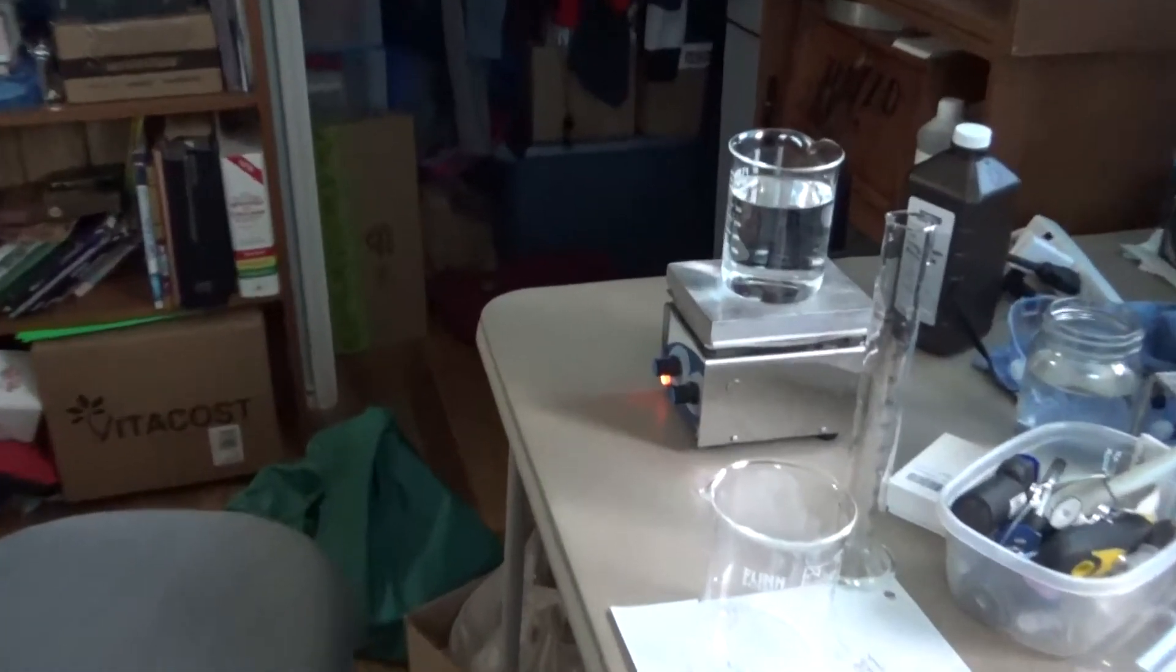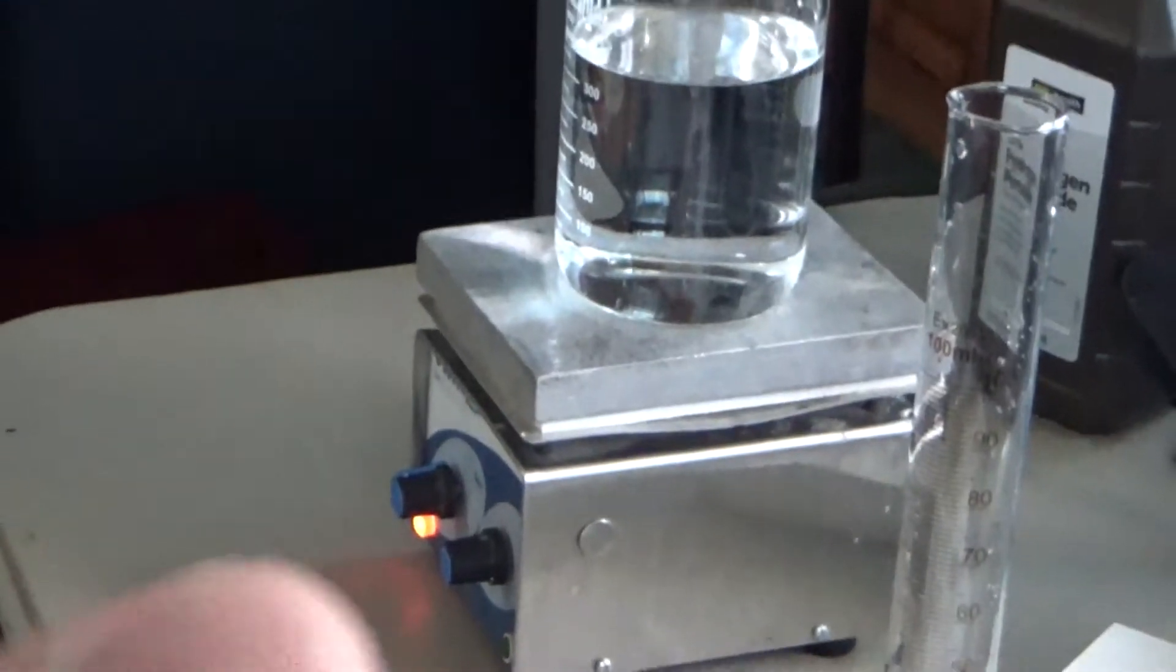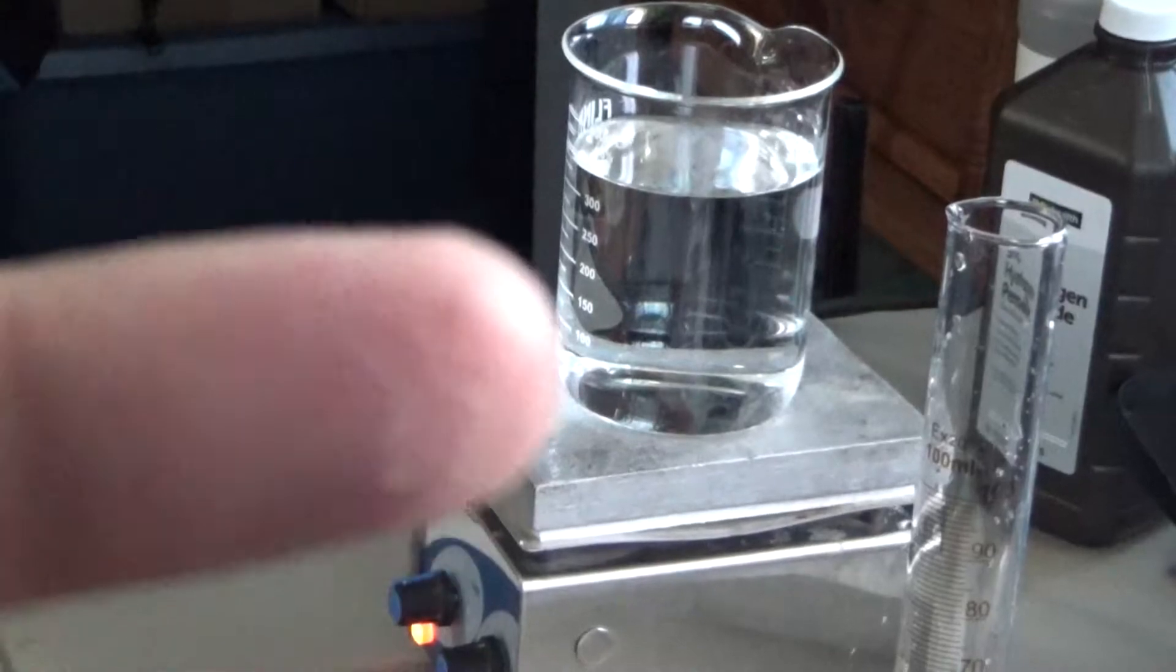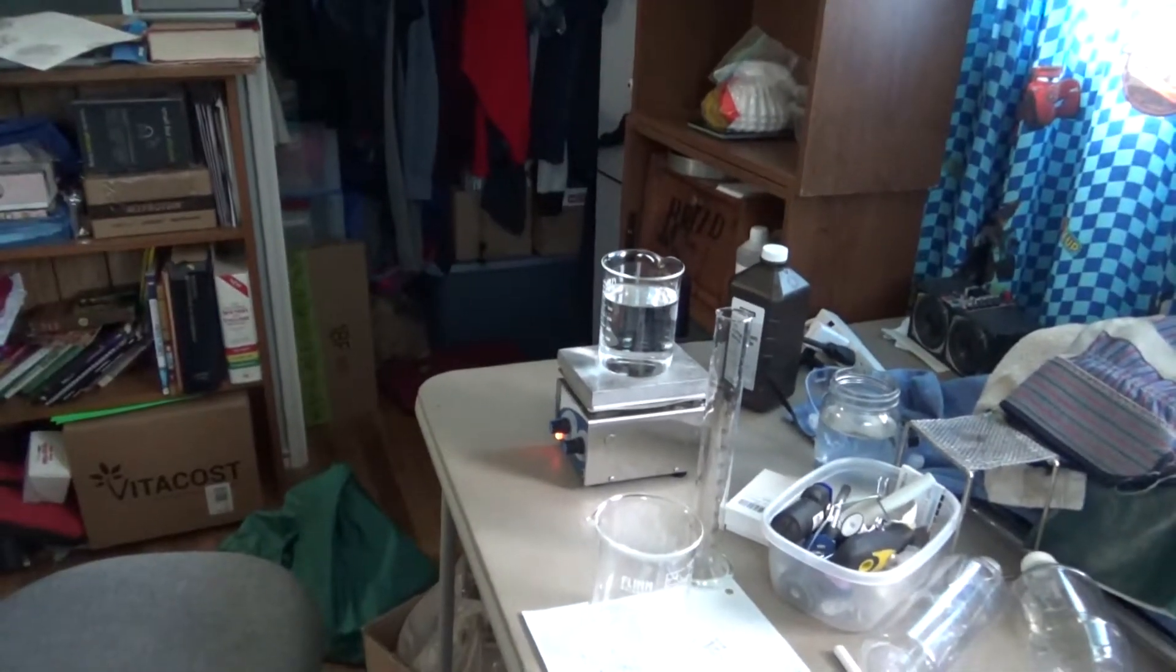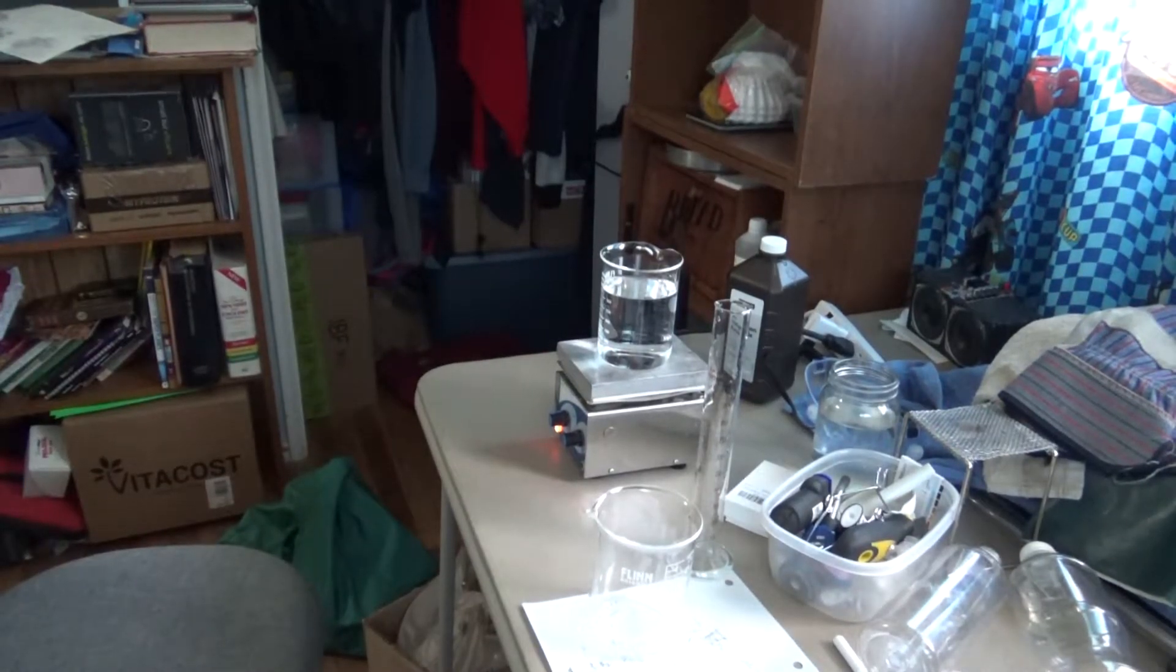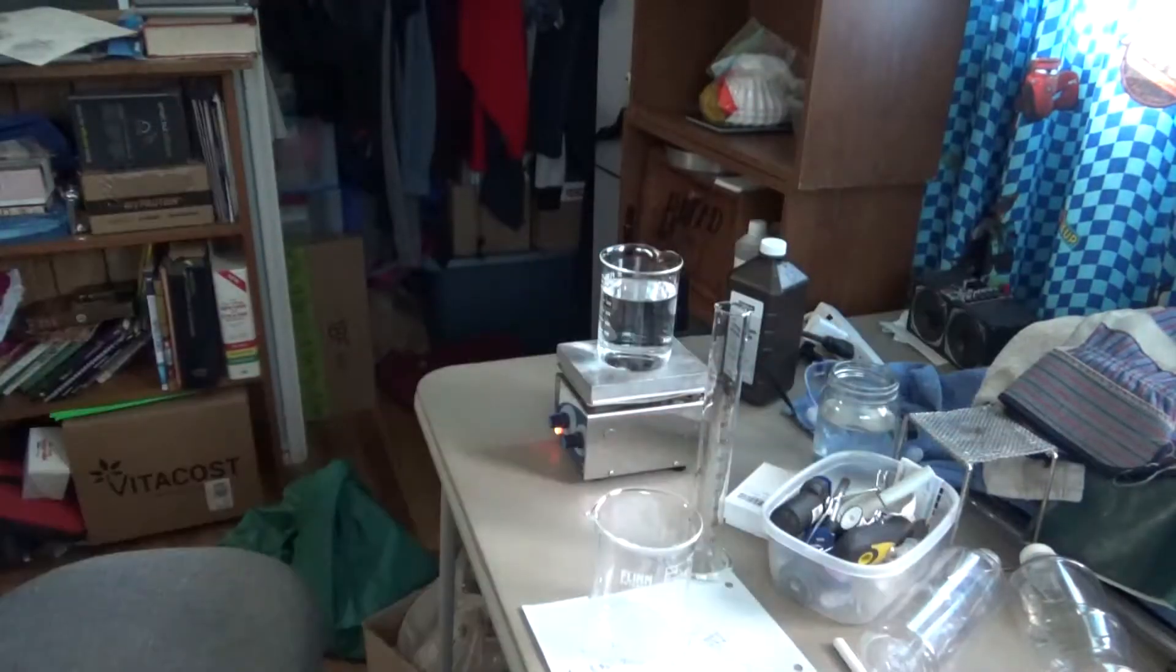Over here, I have my beaker with my peroxide. I've got 333 milliliters of 3% hydrogen peroxide in there. Today I want to test some different catalysts as part of my rocket project.